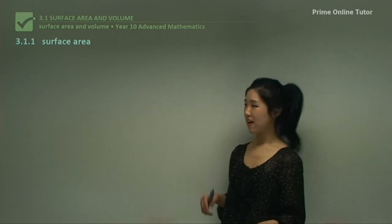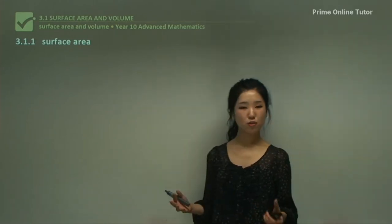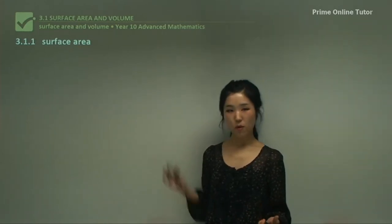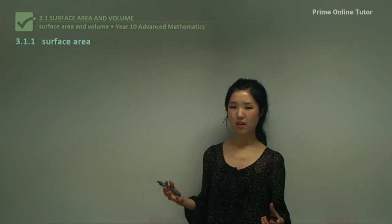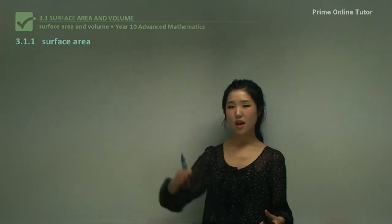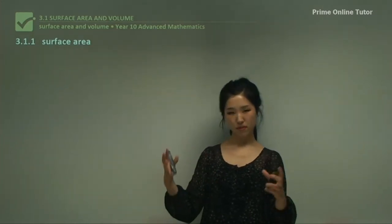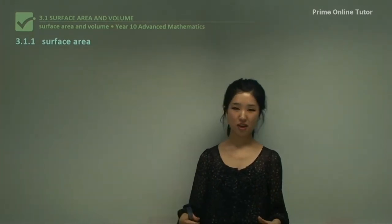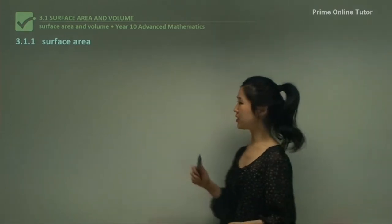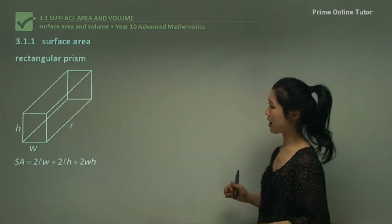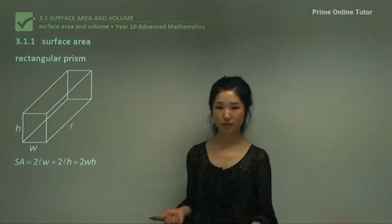Starting with the surface area. For those who are not sure about what surface area is, surface area is basically the outside area of a particular object added up together. I'll show you some shapes, starting with the rectangular prism.